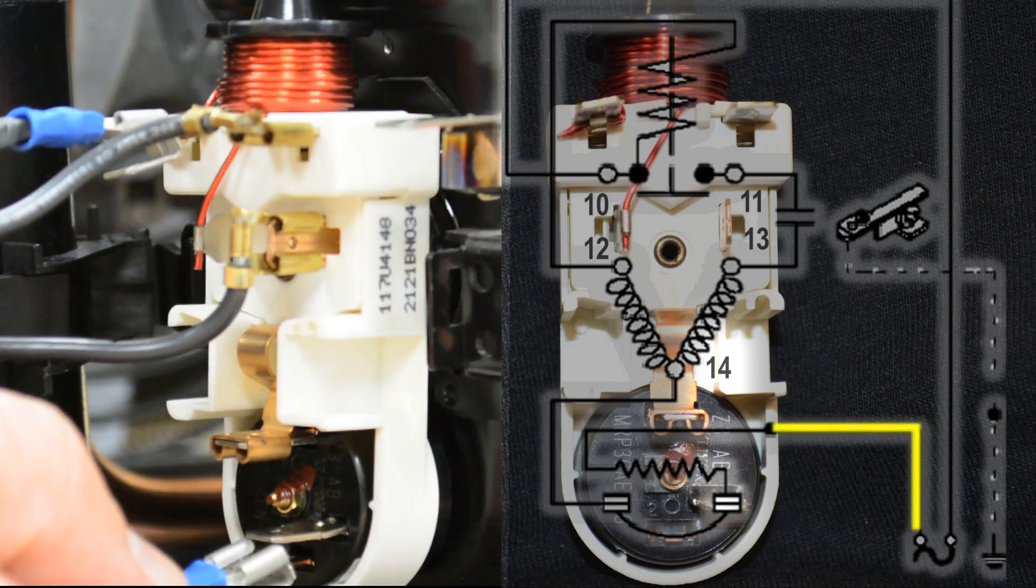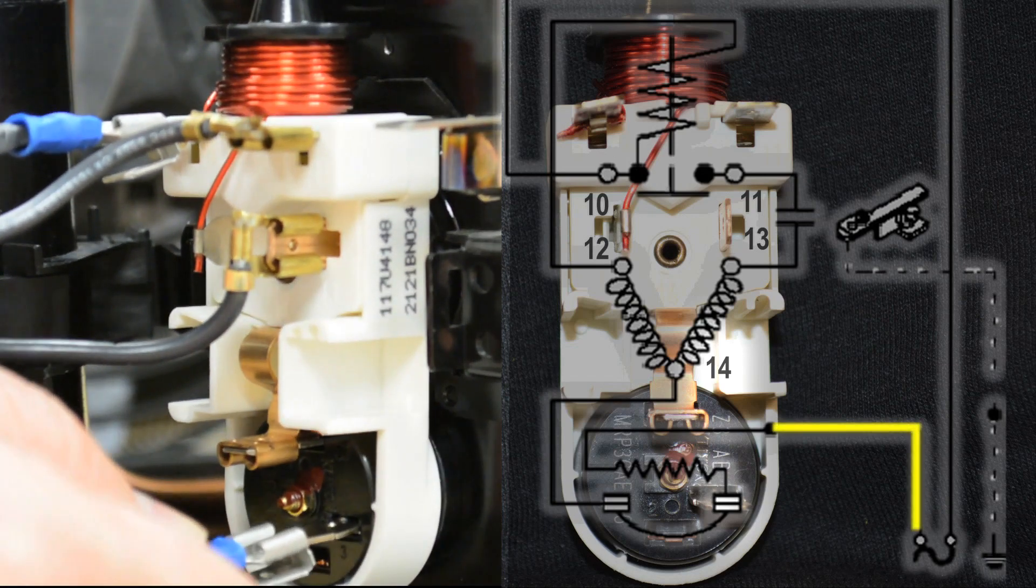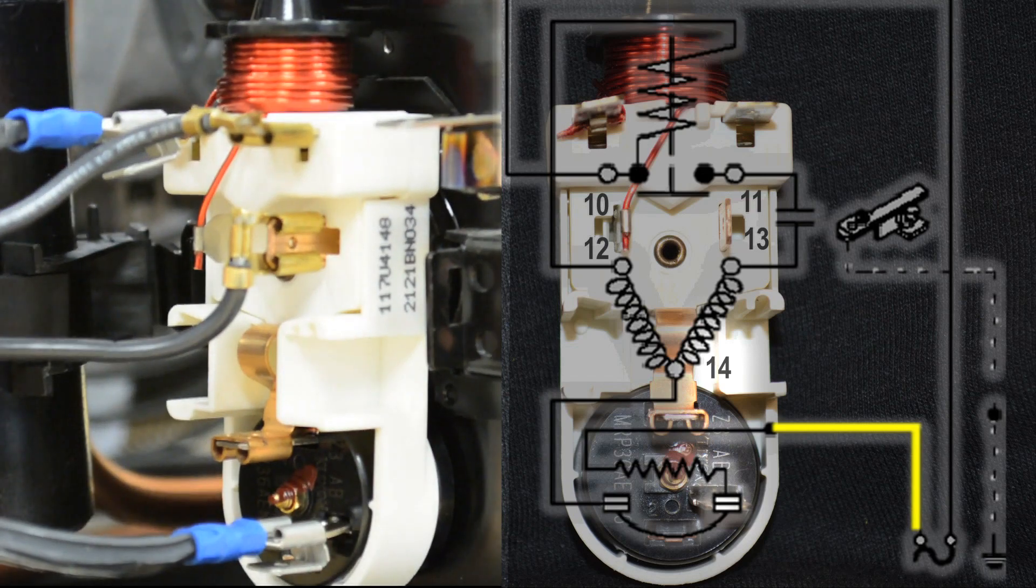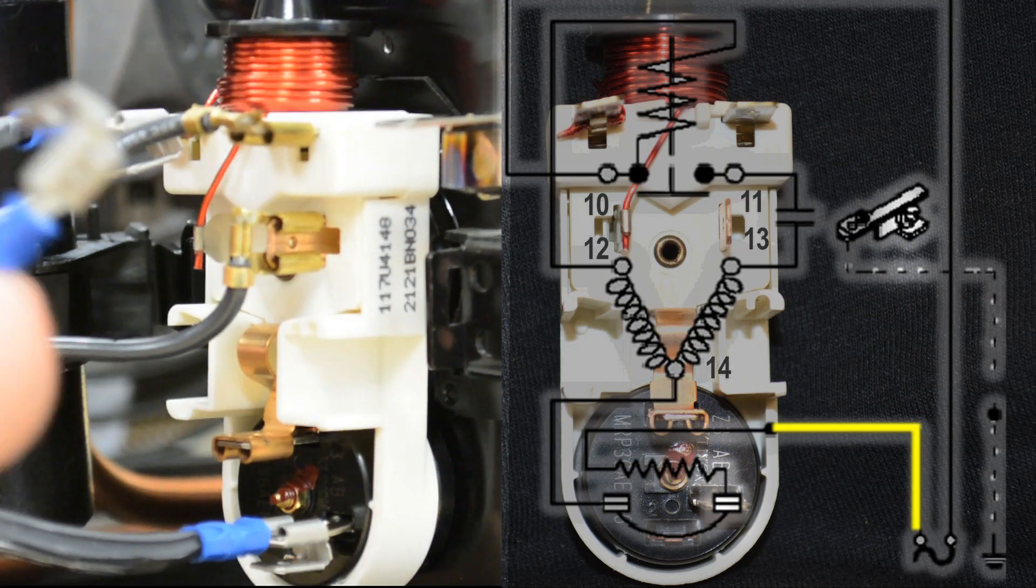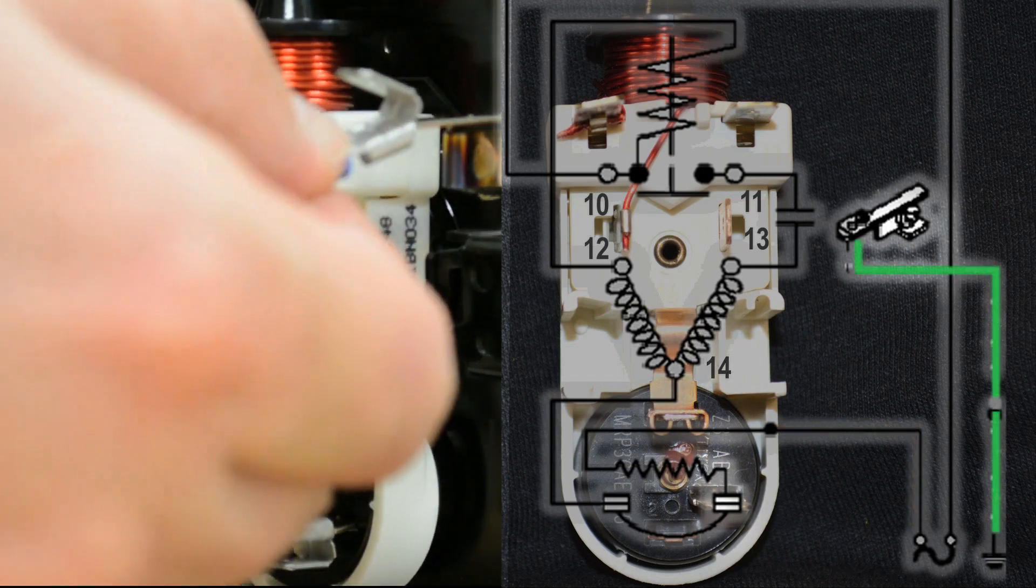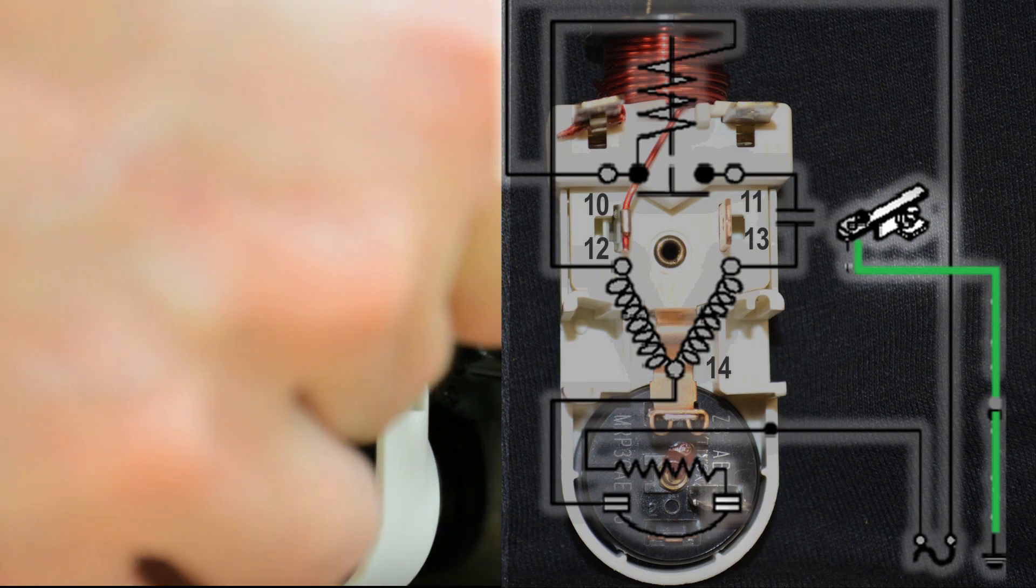Next we'll connect neutral to the compressor motor protector through number 14 on the start relay. Don't forget to connect the ground wire to the ground terminal on the compressor shell.